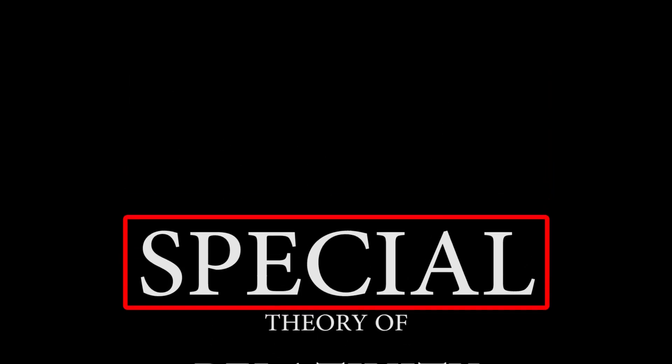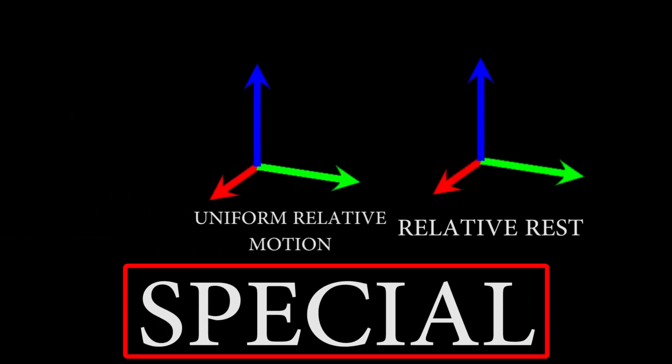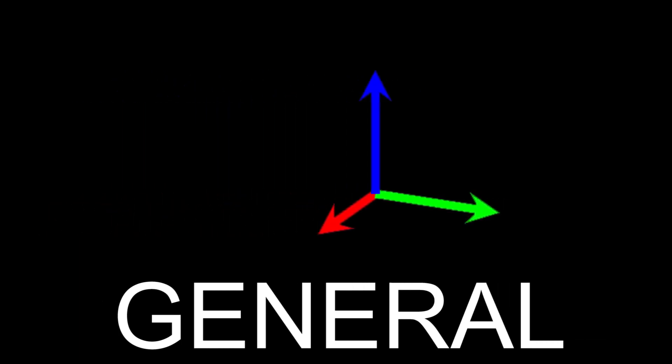Also, we call it the special theory of relativity. The thing special about this theory is that we deal with inertial frame of reference. There is also something called the general theory of relativity. In that, we also deal with non-inertial frames of reference. That is the general version of this theory.